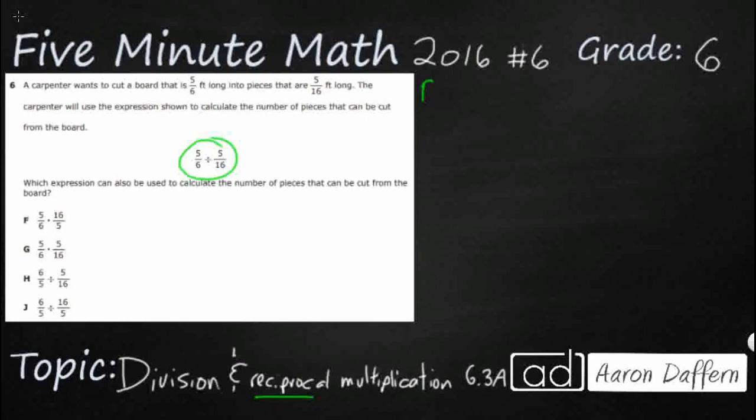So what is a reciprocal? Reciprocals are also sometimes called a multiplicative inverse. So any number times a reciprocal, and this is how we can spot reciprocals, equals one. So you take any number and you multiply it by its reciprocal and it always equals one.